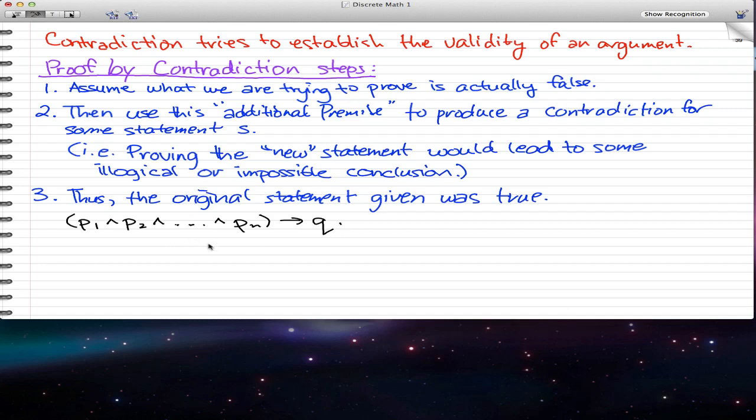So we can establish this argument, we can establish the validity of this argument in another way. And this is the new way: P1, P2, and all the way to Pn, and negative Q implies F0.